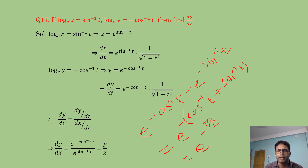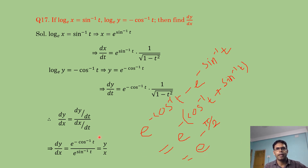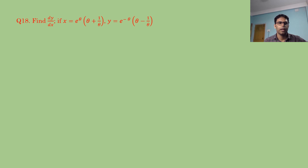This result — dy/dx = e^(−π/2) — may appear in exams as 'show that dy/dx = e^(−π/2)'. Moving to question 18: x = eᶿ·(θ + 1/θ), y = e^(−θ)·(θ − 1/θ). Find dy/dx.